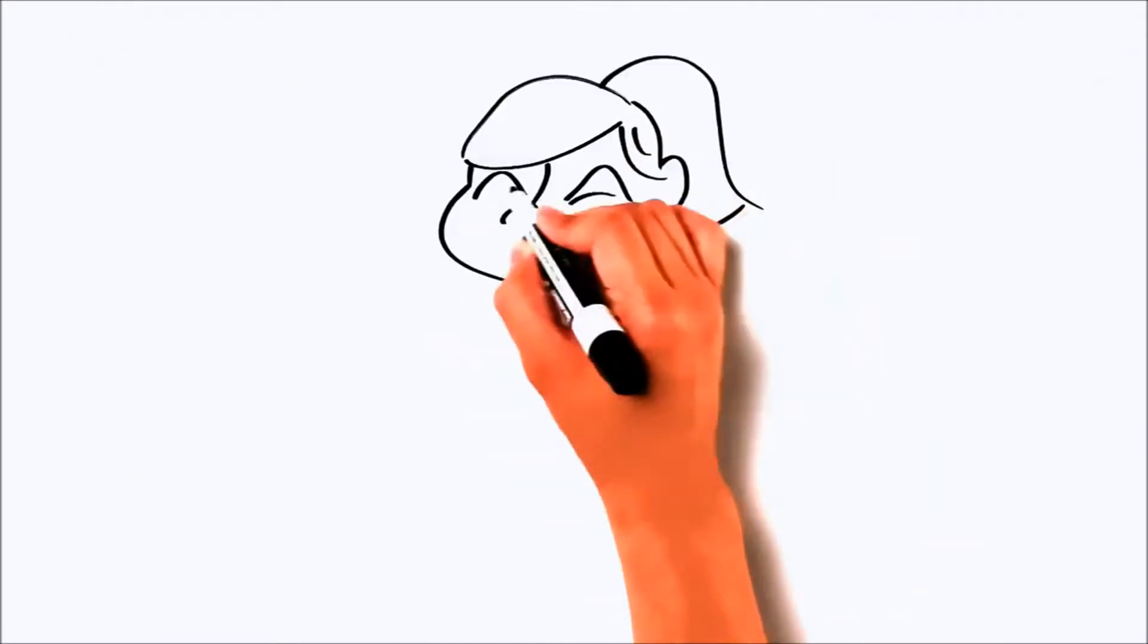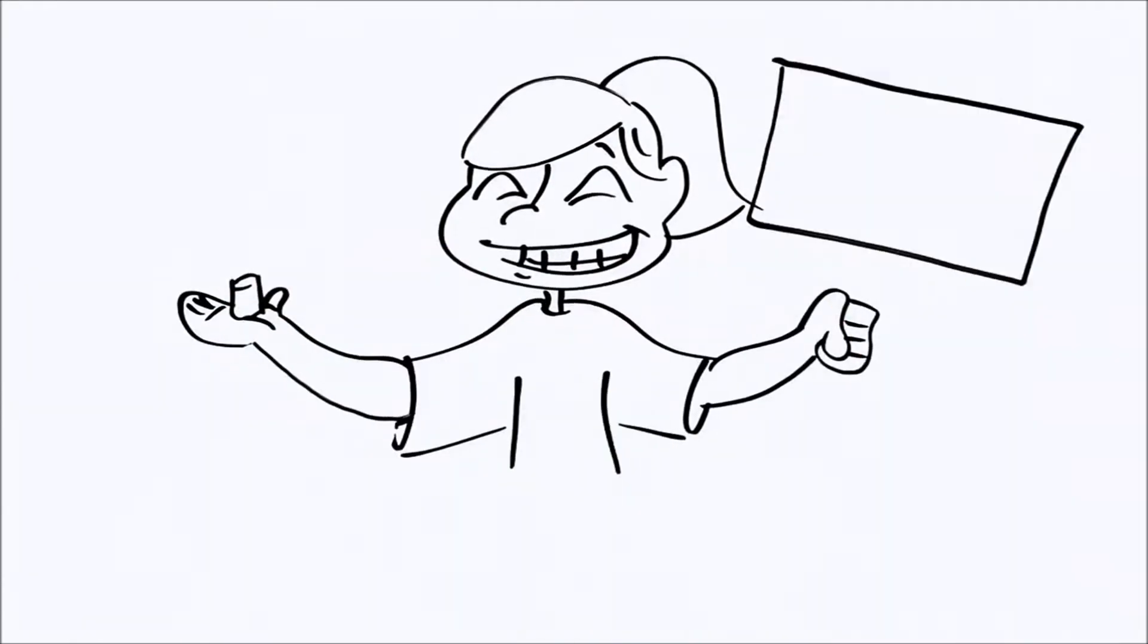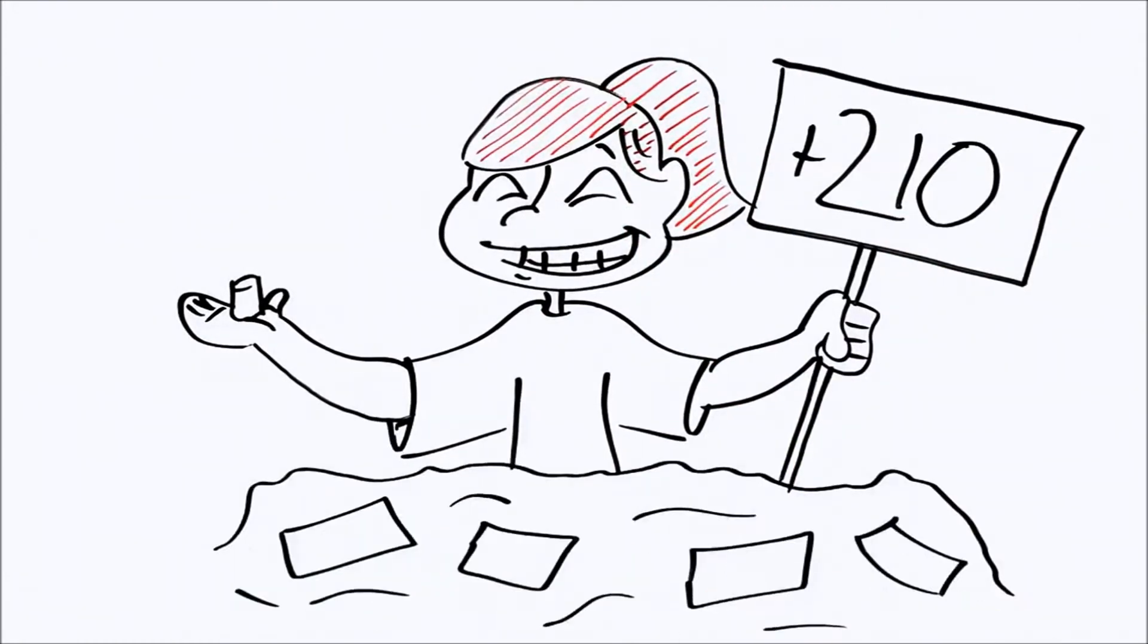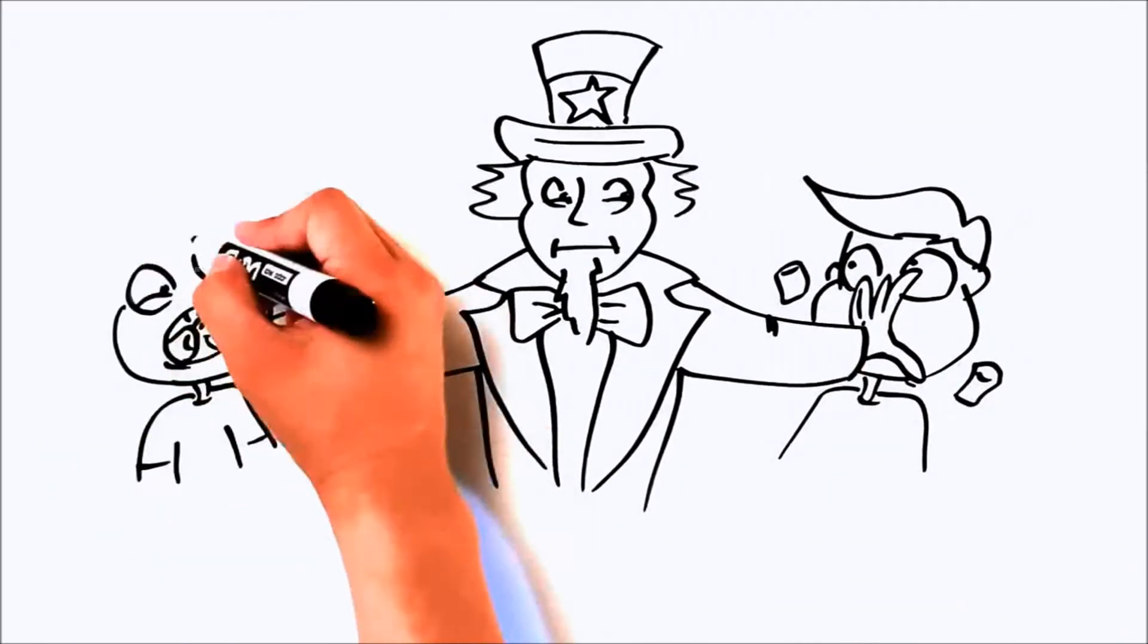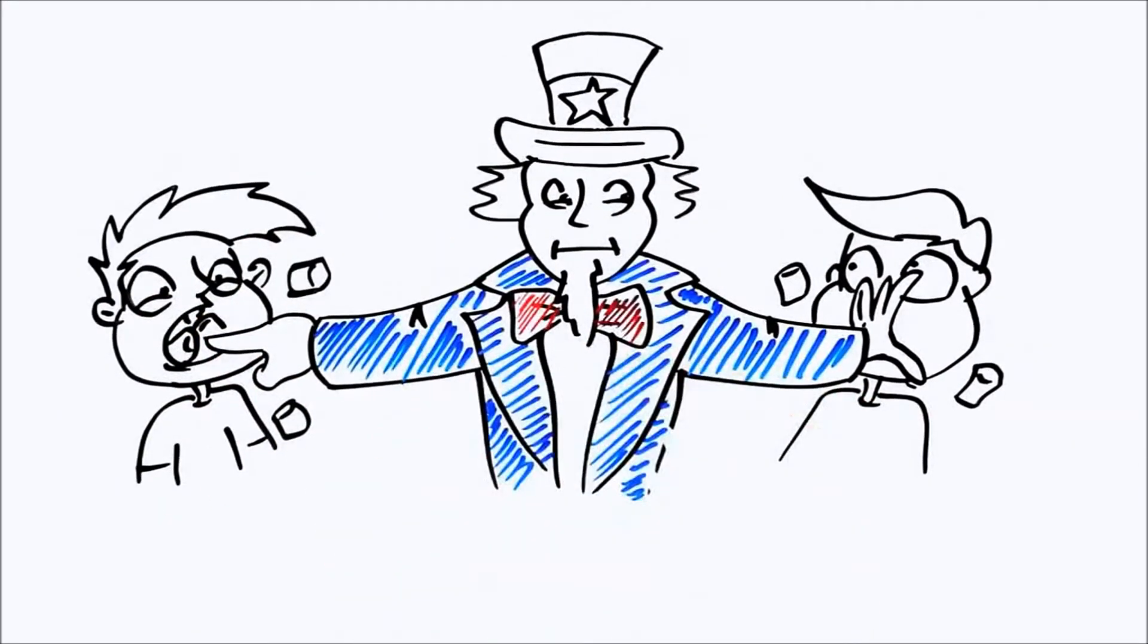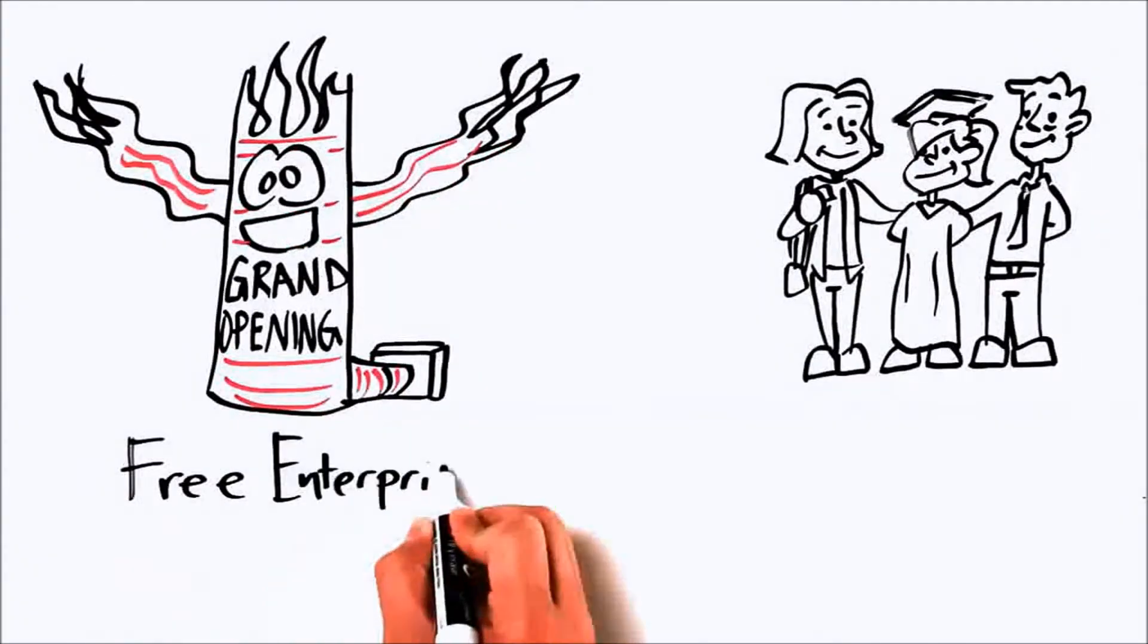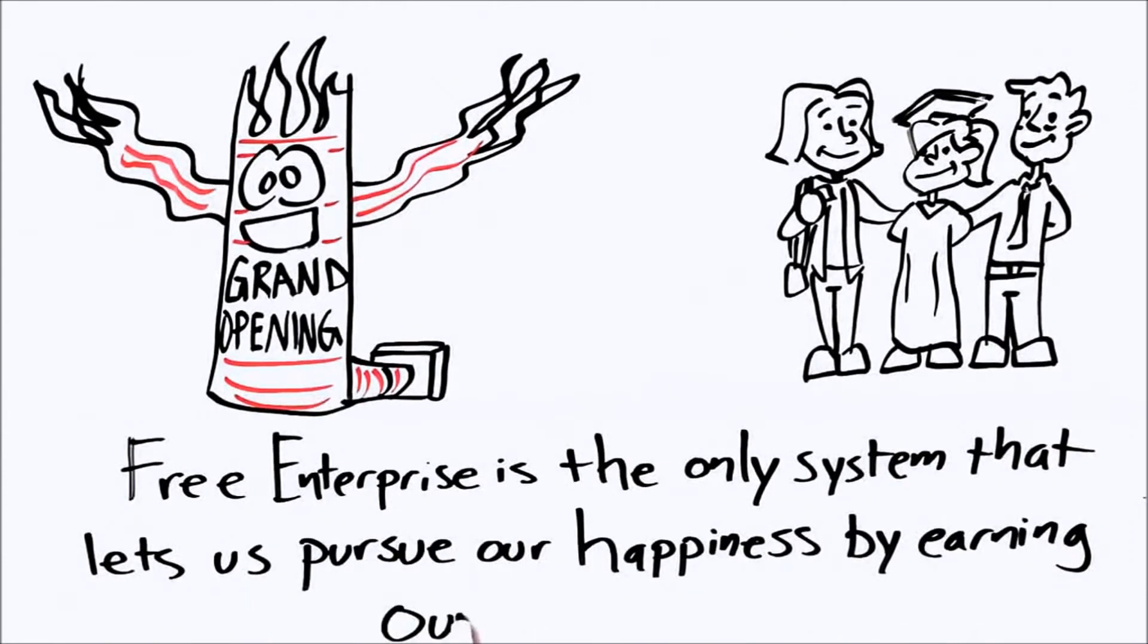The researchers followed up years later to see how their lives were turning out. The kids who had waited for the second marshmallow had an average SAT score 210 points higher than the kids who didn't wait. They also made a lot more money and were less likely to be involved in crime and drugs. Teaching young people to defer their gratification to earn their success is clearly in our national interest. But expanding the welfare state is basically just shoving marshmallows into our mouths. Free enterprise is the only system that allows us to pursue our happiness by earning our success. And that's the right thing to do, whether we get rich or not.